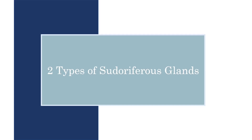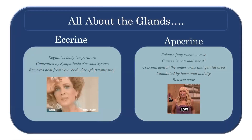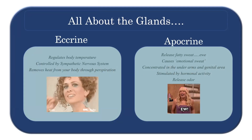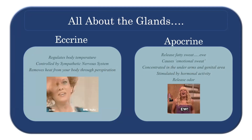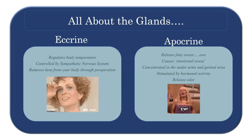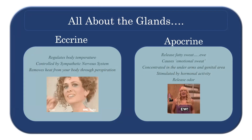There are two types of pseudoriferous glands. As a cosmetology student, there's a good chance you won't learn about these two types because they rarely show up on a test. However, some viewers may be skincare or esthetics students, so let's introduce them. The first is the eccrine gland, which regulates your body temperature. It's controlled by the sympathetic nervous system and removes heat from our body through perspiration — so when we're sweating from heat or exercise, that's the eccrine gland.